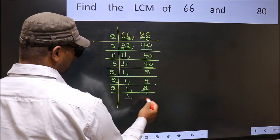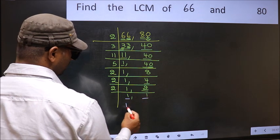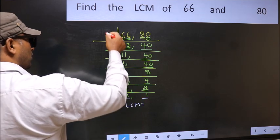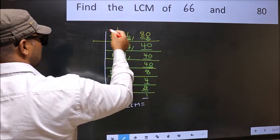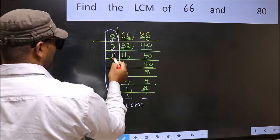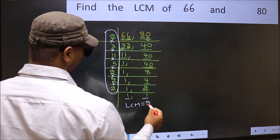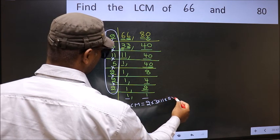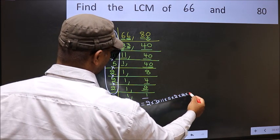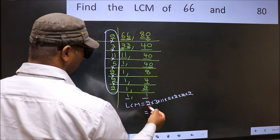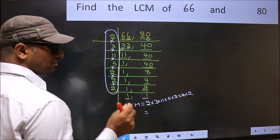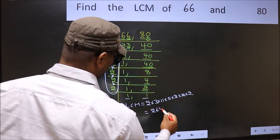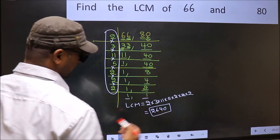So we got 1 in both the places. So our LCM is the product of these numbers. That is 2 into 3 into 11 into 5 into 2 into 2 into 2. When we multiply these numbers, we get 2640 as our LCM.